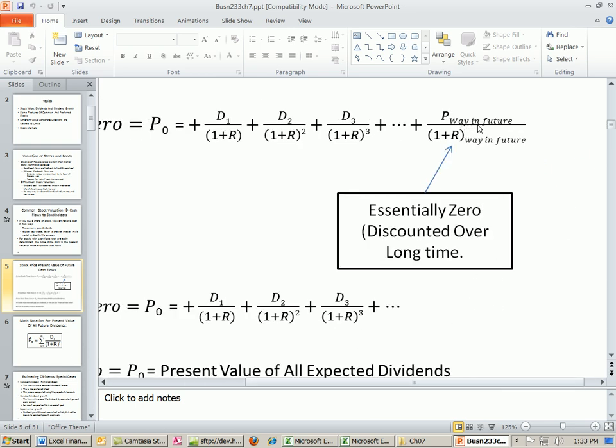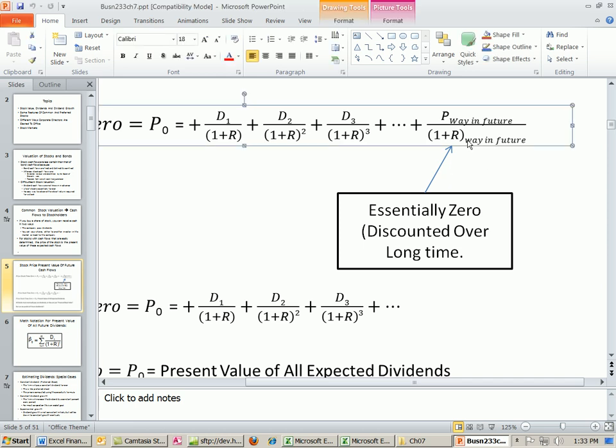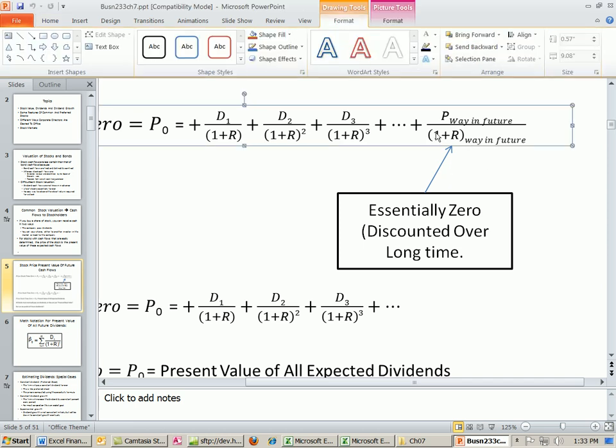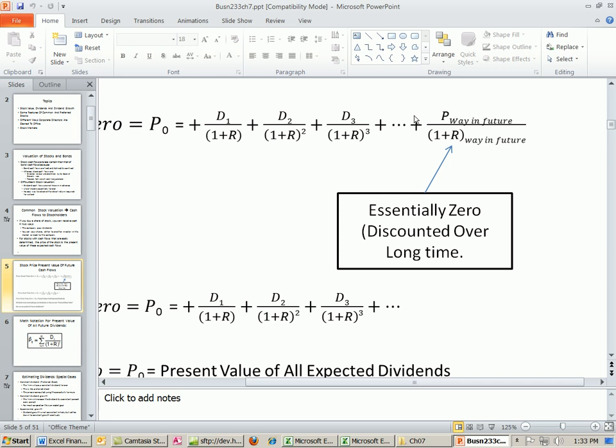So this is our price way in the future. And this is our discount rate. It actually should be an exponent here. But the point here is, at some point when this gets way in the future, because stocks have an unlimited life. It's not like a bond contract that says 30 years. Stocks, hypothetically, can go on forever.